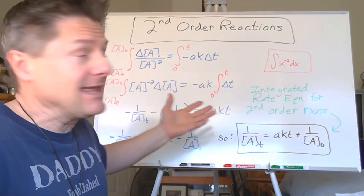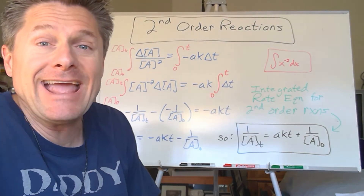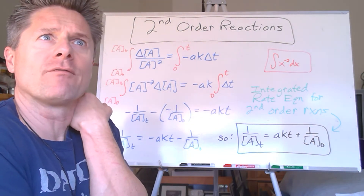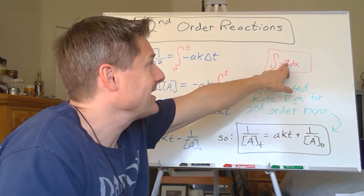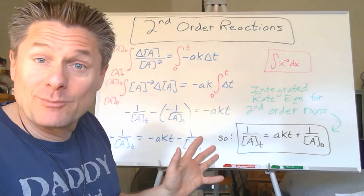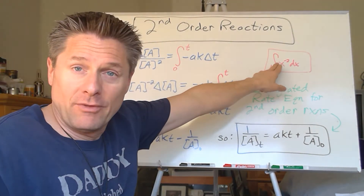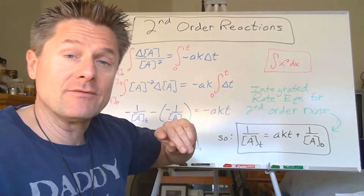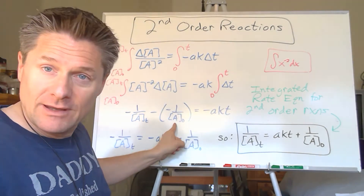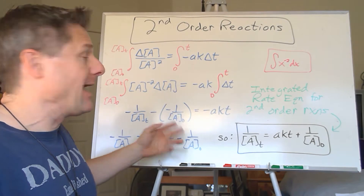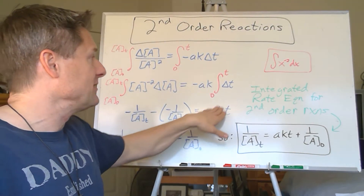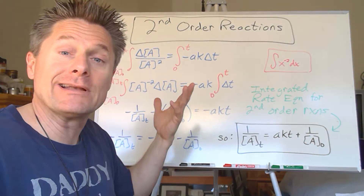We haven't run into this integral yet. It's the integral of x to the minus two times dx, which equals x to the n+1 over n+1, where n is negative two. For zero order, n was zero; for first order, n was negative one. We're not going to get any log terms on this one. When you work through the details with n equal to negative two, you get negative one over the final concentration at time T minus negative one over the initial concentration, all equal to negative aKT.